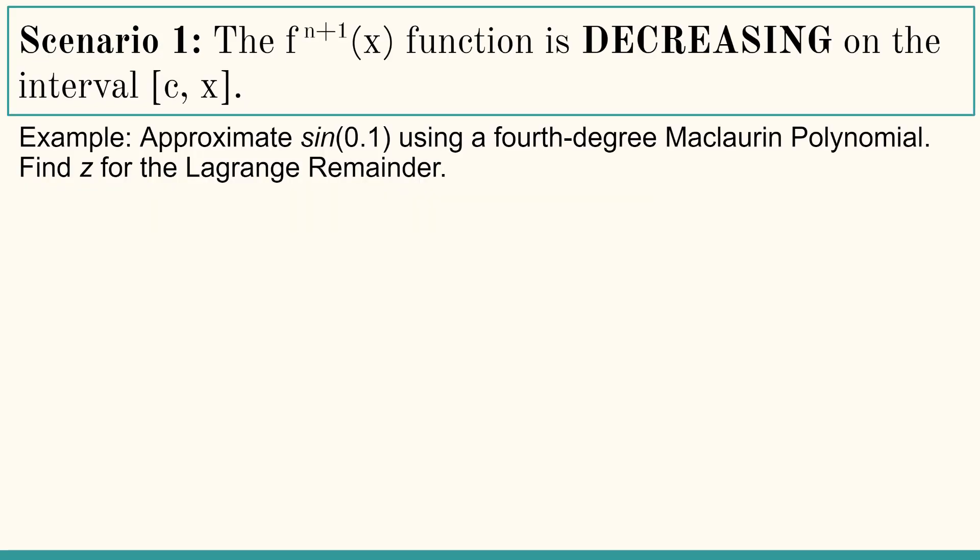Scenario one. The n plus 1st derivative of f of x, that function, is decreasing on the interval c to x inclusive. For example, approximate sine of 0.1 using a fourth degree Maclaurin polynomial, find z for the Lagrange remainder. First of all, let's get the basics. n is 4, the degree of our polynomial, c we're centered at 0 because it's a Maclaurin, and x, the value we're approximating, is 0.1.